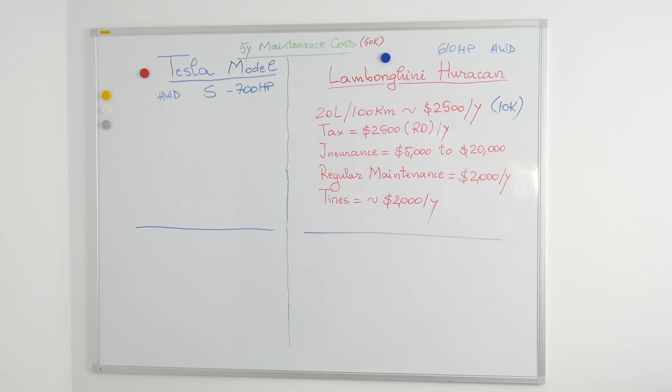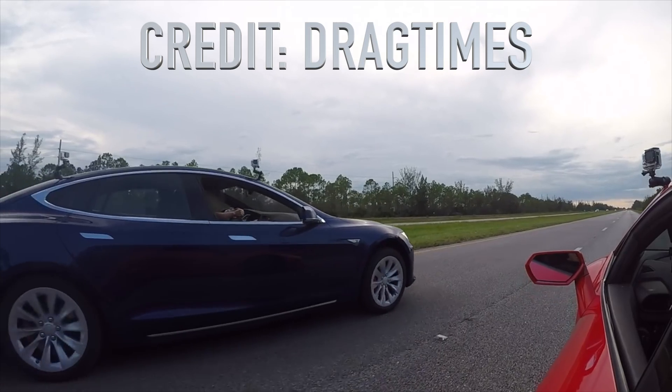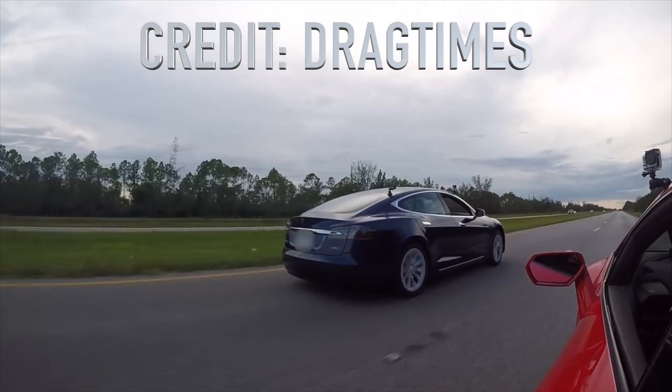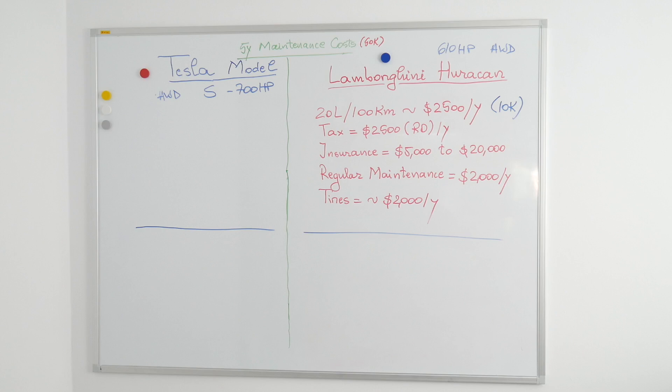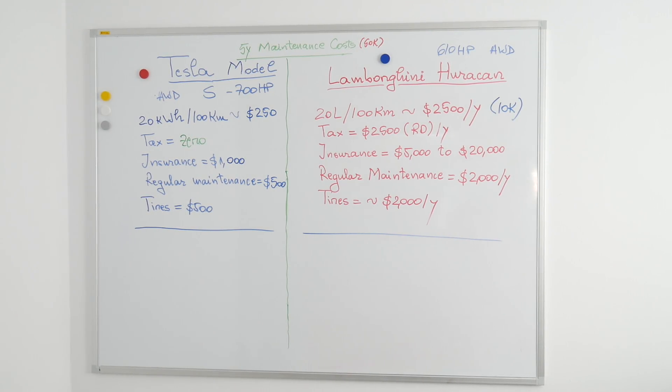The Tesla Model S has 700 horsepower and it's all-wheel drive. It's faster than the Lamborghini Huracan from 0 to 60 miles per hour, so let's compare these two. It's not fair to compare a powerful electric car to a standard inline-four conventional car with 100 horsepower, so here we go.